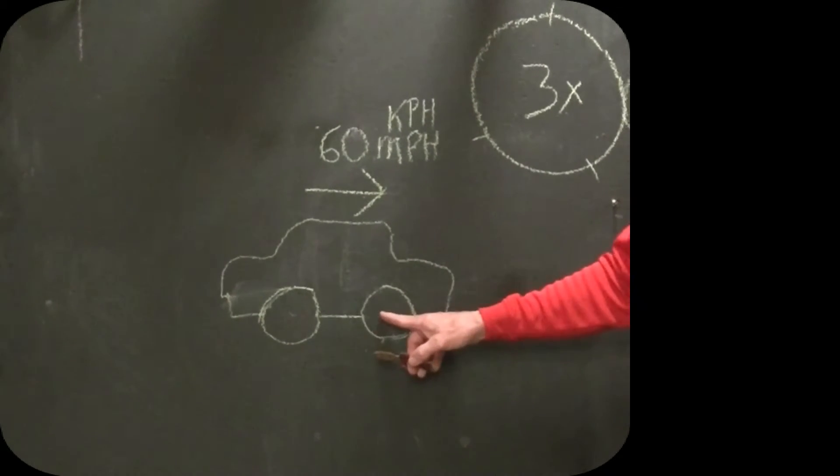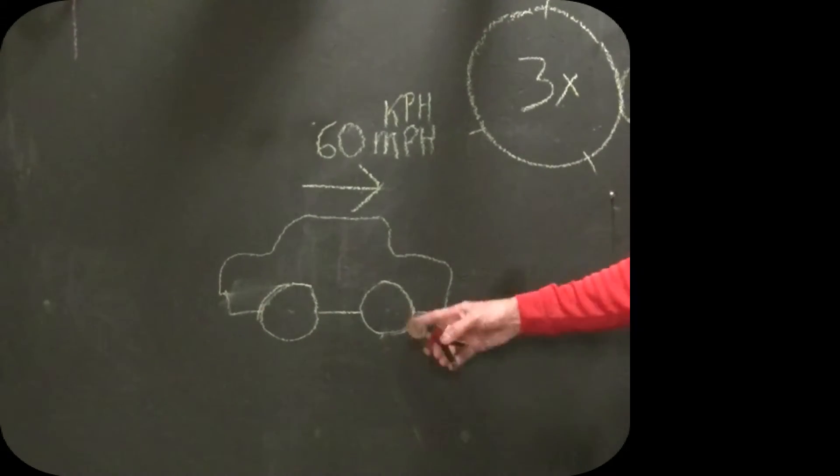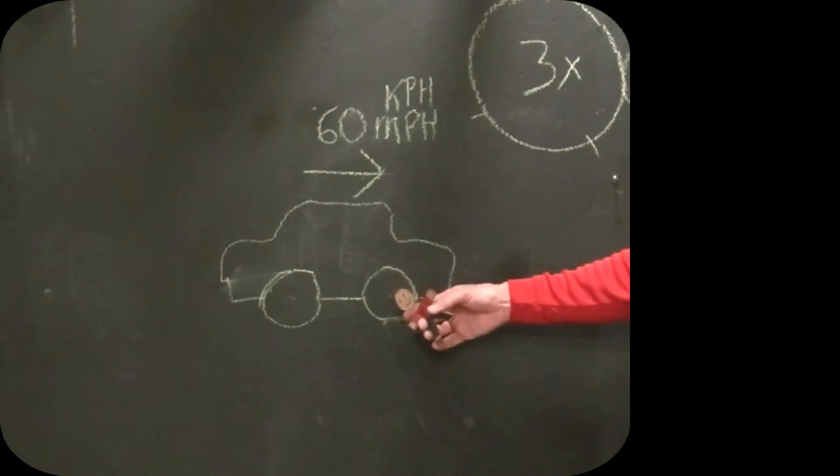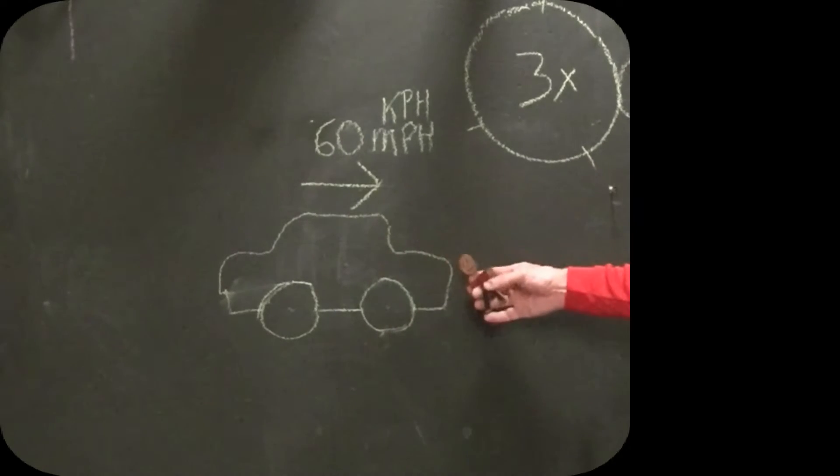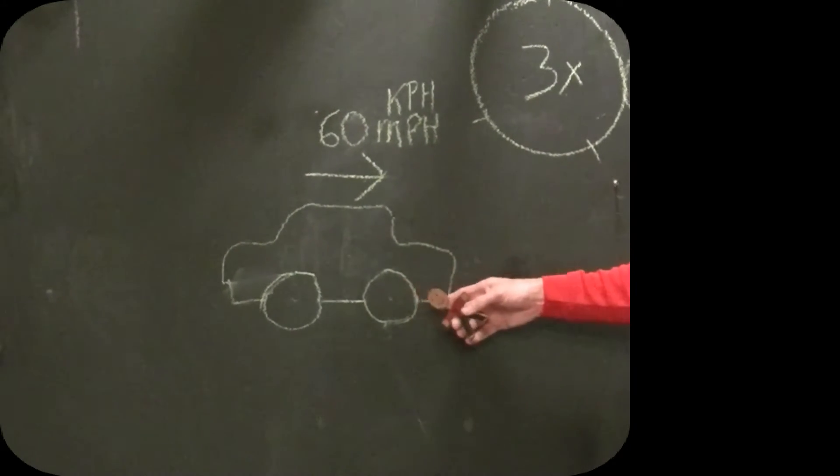Now if I were to ask you how fast the tires are going, most people would say, well, the tires are going 60 miles an hour too because the car is going 60 miles an hour. They're going to get to the same place at the same time as the car, they're not traveling differently.